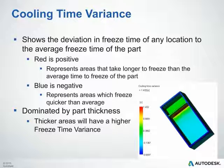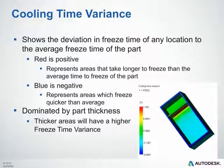The cooling time variance plot shows the deviation in freeze time of any location relative to the average freeze time of the part. Red (positive) represents areas that take longer to freeze than average; blue (negative) represents areas that freeze quicker. This is largely dominated by part thickness, so thick areas typically have higher freeze time variance. To address high variance, consider modifying the part thickness or adding focused additional cooling in those areas.